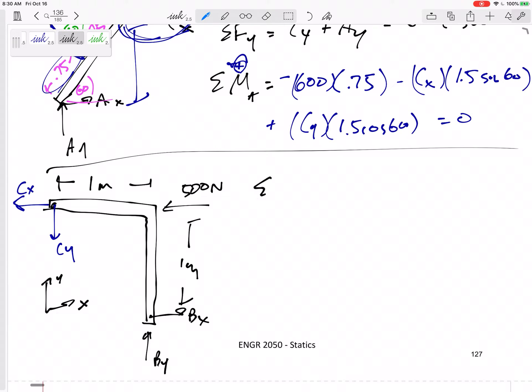I think I'm ready to sum the forces in the X direction. Negative CX. Why negative? Because the sum of the forces, these equilibrium equations are drawn according to the axes. Negative CX plus BX minus 500 equals zero. Summing the forces in Y: CY down, BY up equals zero.